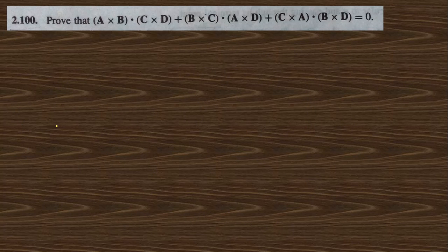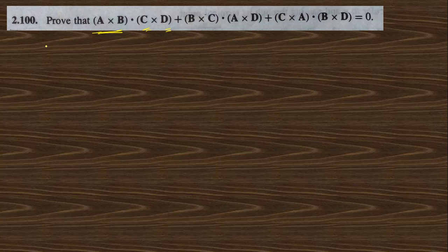Next, problem 2.100: prove that (A × B) · (C × D) equals a certain expression. This can be written using the BAC-CAB rule. A × B dot C can be written as A dot (B × C), and this expression A × B dot C equals A dot B cross C, which means A cross B dot C. This can be rewritten as (A × B × C) dot D.